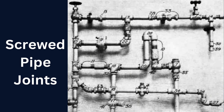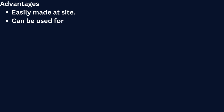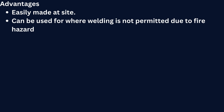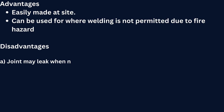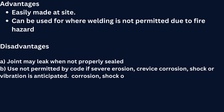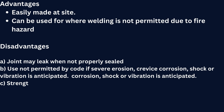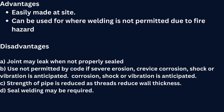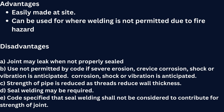Screwed pipe joints: the easiest type of installation, where based on the grooves inside or outside the fittings, we just fit the pipe. Advantages: easily made at site; can be used where welding is not permitted due to fire hazard. Disadvantages: A. joint may leak when not properly sealed; B. use not permitted by code if severe erosion, crevice corrosion, shock, or vibration is anticipated; C. strength of pipe is reduced as threads reduce wall thickness; D. seal welding may be required; E. code specifies that seal welding shall not be considered to contribute to the strength of the joint.